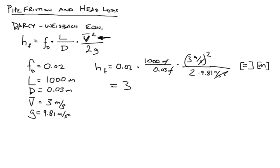Once we crunch the numbers, 0.02 times a thousand divided by 0.03 times 3 squared divided by 2 divided by 9.81, we end up with 306 meters of head loss. So that's what this says, is that one pipe that's a thousand meters long and one inch in diameter at three meters per second has the same energetic requirements as pumping fluid straight up with no friction losses but straight up 306 meters vertically.